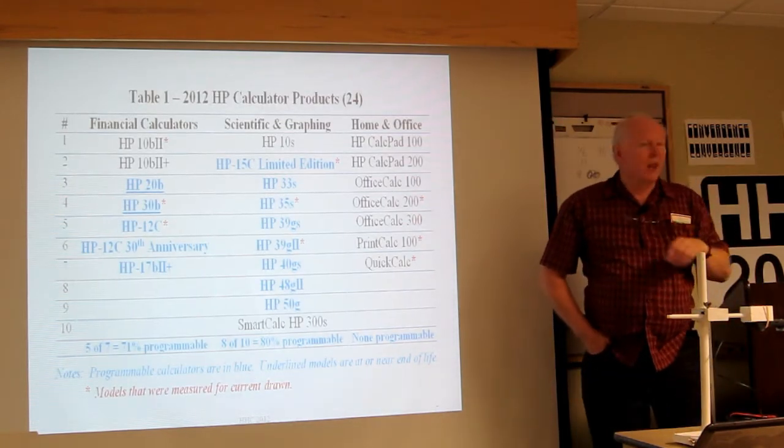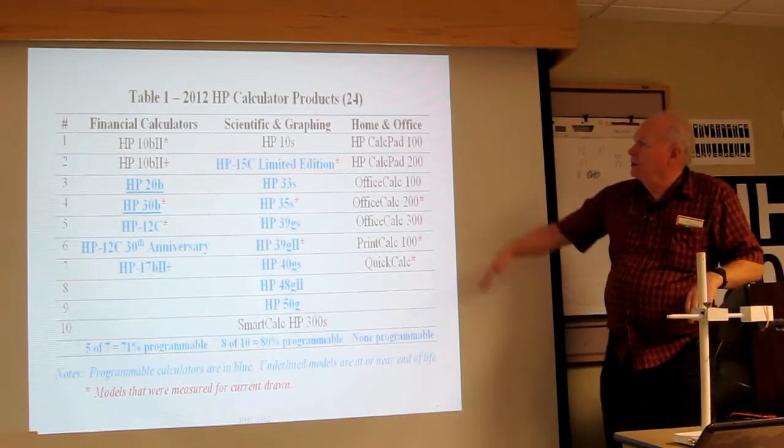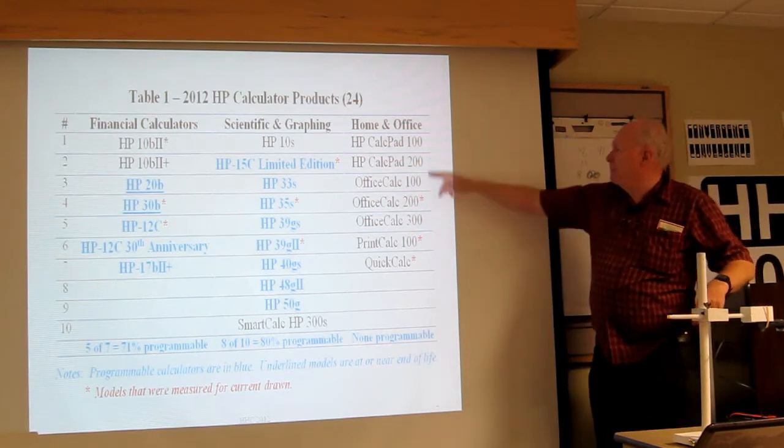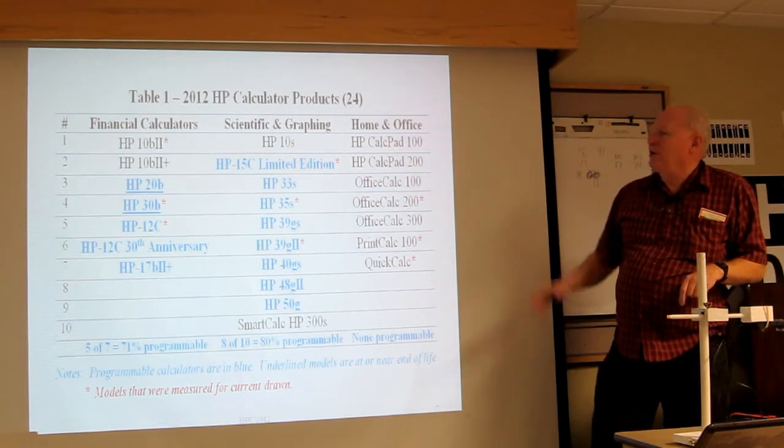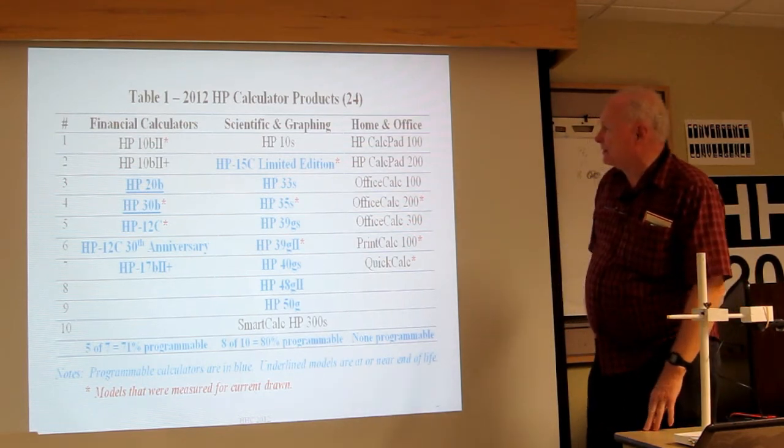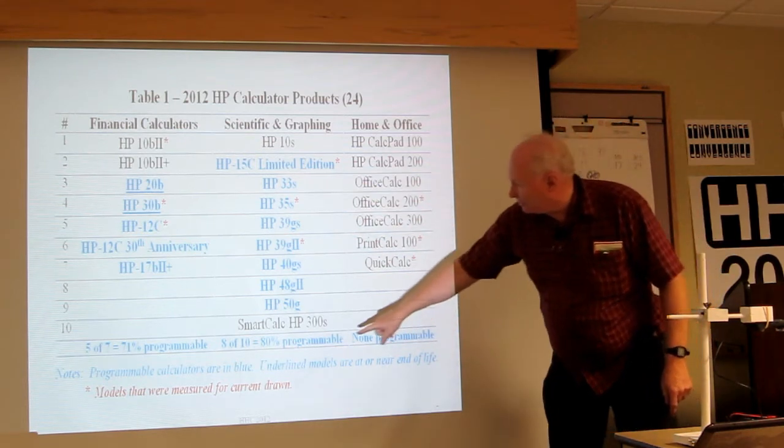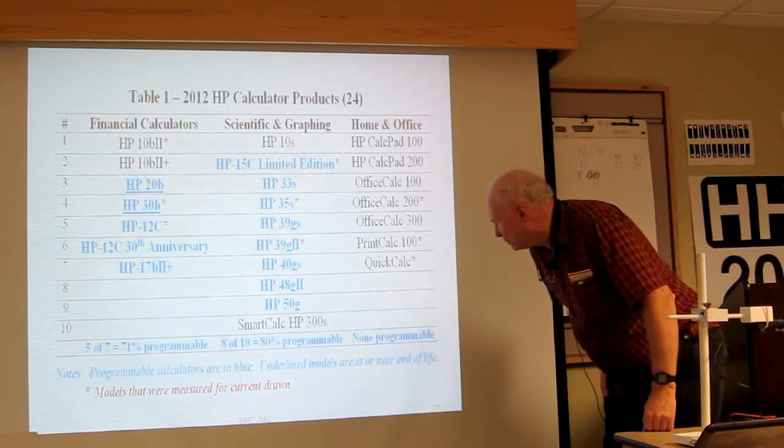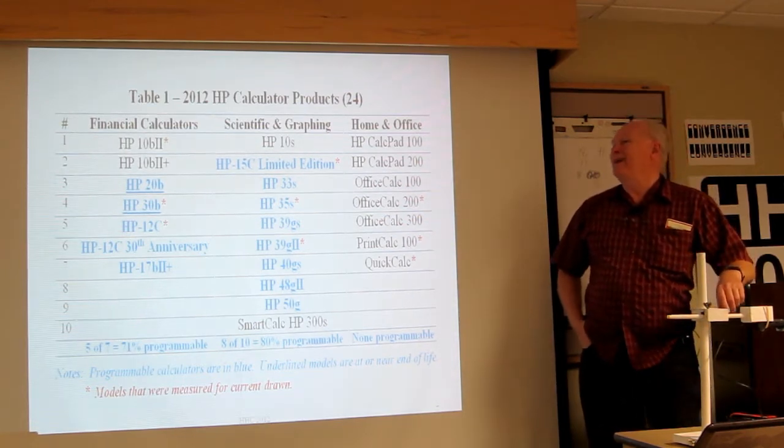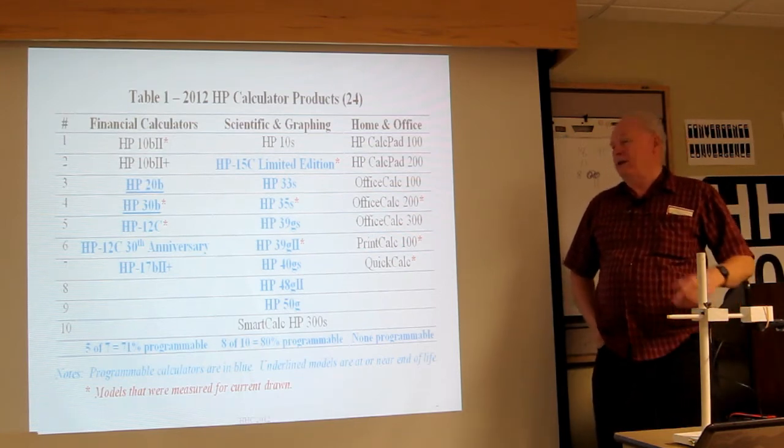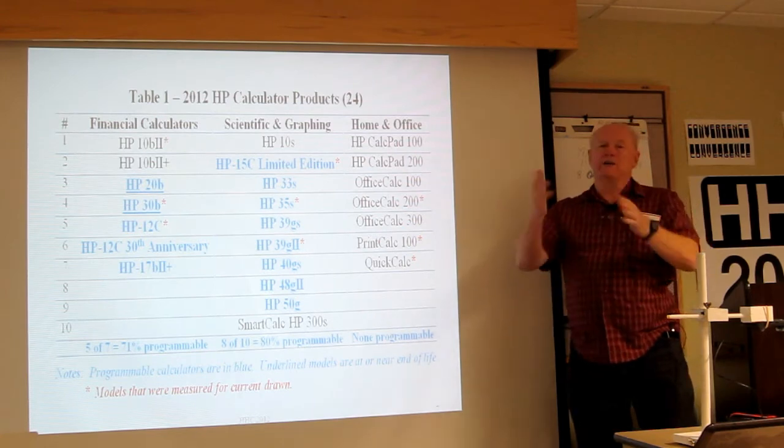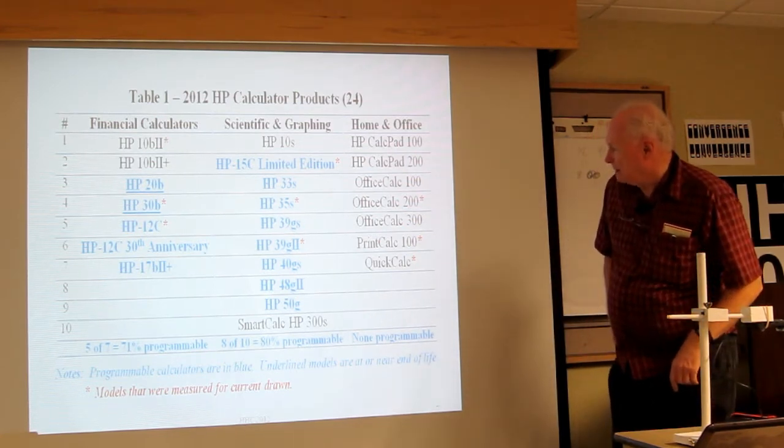Here's the current lineup of HP. They're divided into three categories: financial calculators, scientific graphing, and home and office. The home and office is a relatively new category. They have model numbers that we're probably not too familiar with. What I did was to select three in each of the columns, so I measured nine calculators. That's what I'm going to talk about. A somewhat controversial aspect is on this table. The 30B and the 20B I have underlined, and the note says programmable calculators are in blue. Underlined models are at or near end of life.